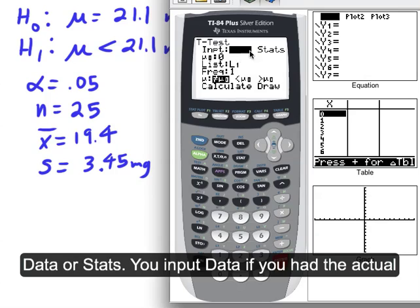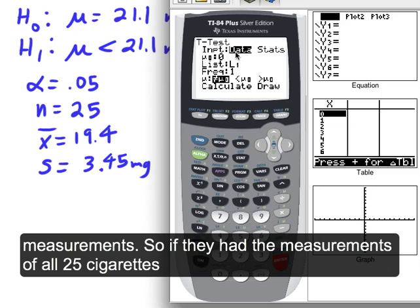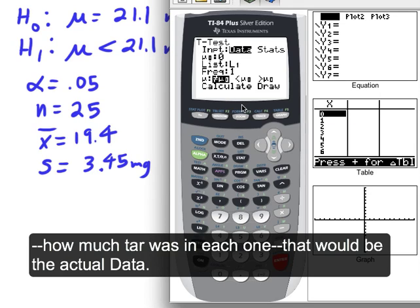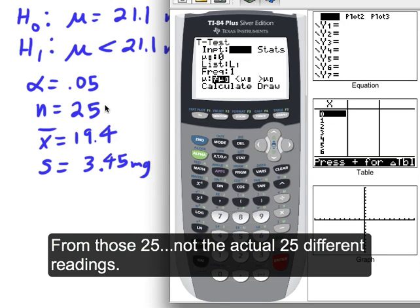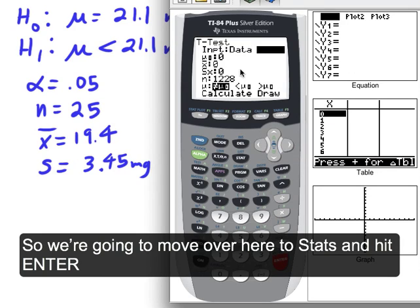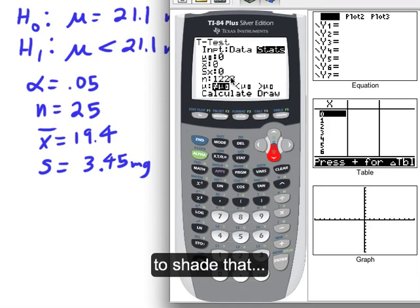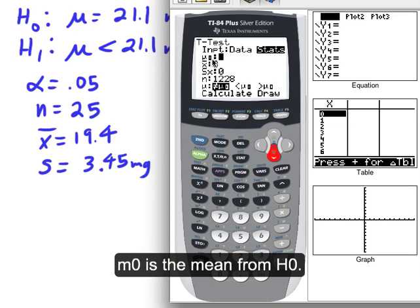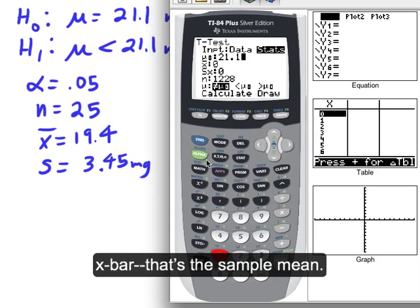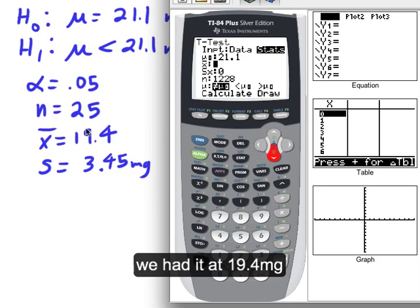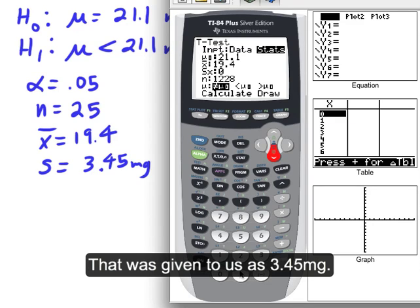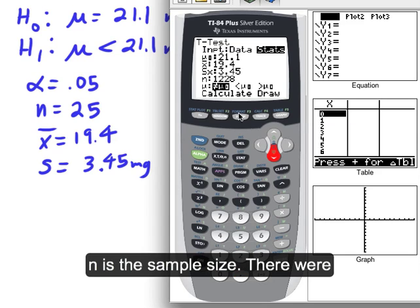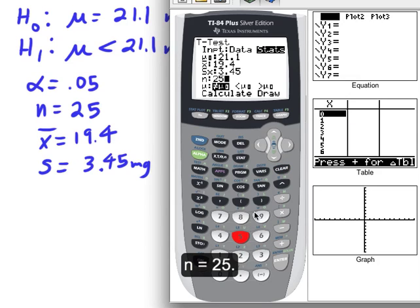And then you have your choice here, input data or stats. You input the data if you had the actual measurements. So like if they had the measurements of all 25 cigarettes, how much tar was in each one, that would be the actual data. But we have the statistics. We have the mean and the deviation from those 25, not the actual 25 different readings. So we're going to move over here to stats and hit enter. Mu zero, that's the mean from H zero. So if you look at your H zero, it says mu equals 21.1. So 21.1 is what goes here.